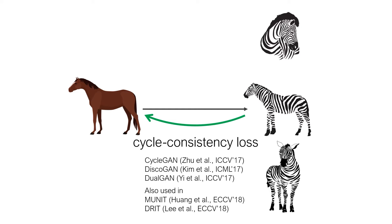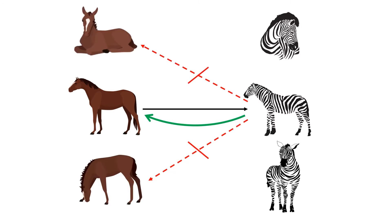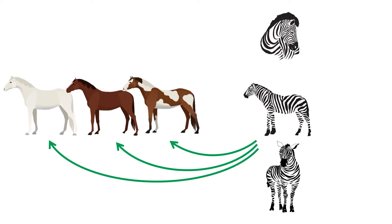That is, an inverse translation function is learned at the same time to minimize pixel reconstruction loss. Of course, the back translation should be penalized if the pose becomes different. However, the pixel cycle loss assumes bijection, which is sometimes too restrictive. For example, there are many plausible horses that correspond to the same zebra. Once the horse is transformed into a zebra, the color information of the horse is gone. Therefore, it shouldn't really matter which color the back-translated horse becomes.